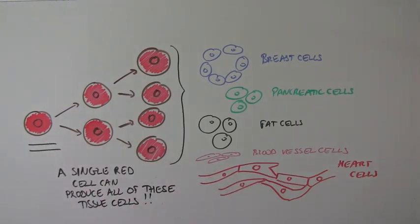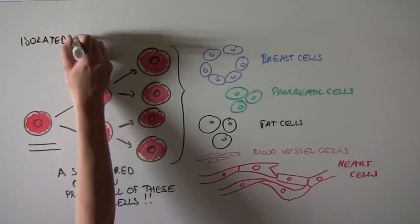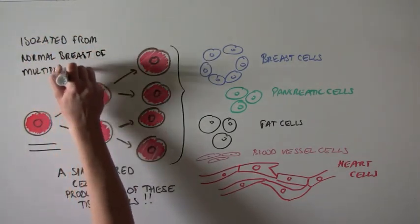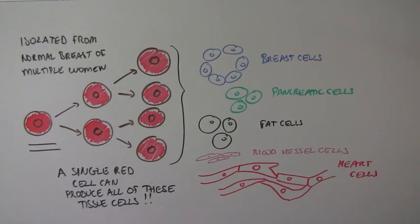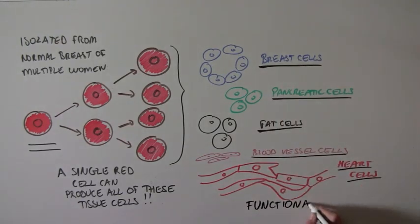So all of this data shows that these red cells, isolated from normal breast tissue from multiple women, have the ability to produce all kinds of different cells that are perfectly functional.